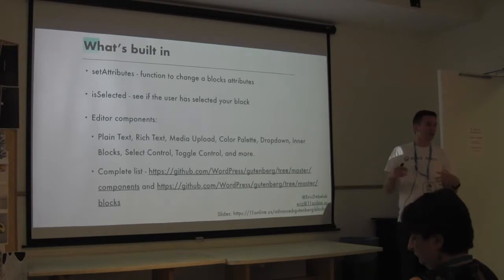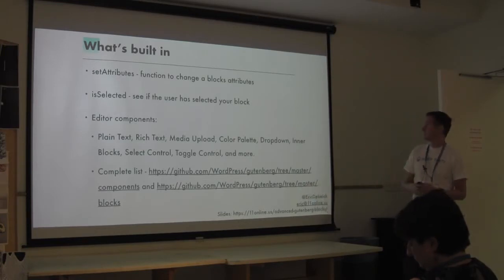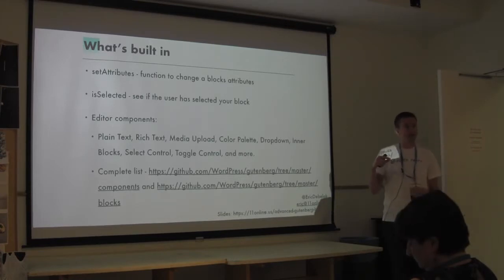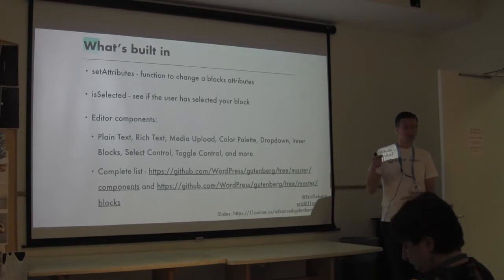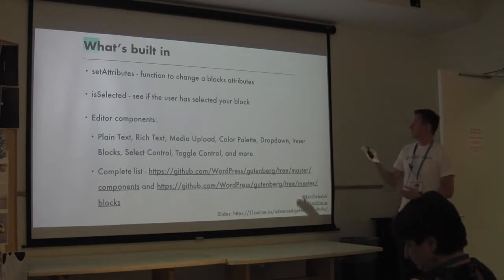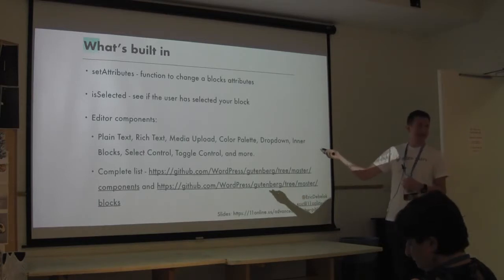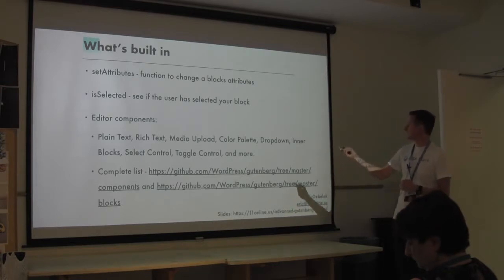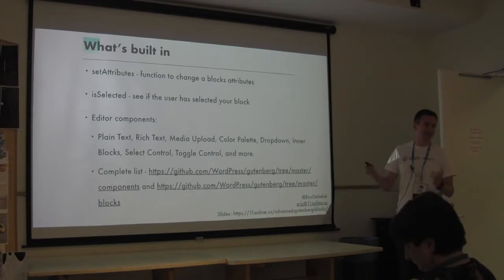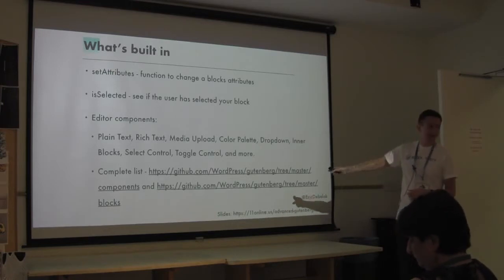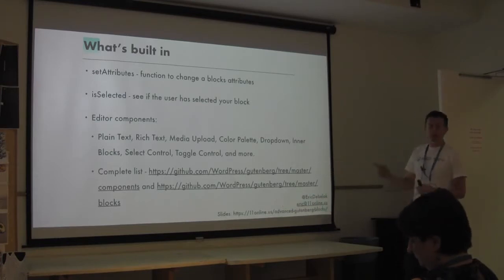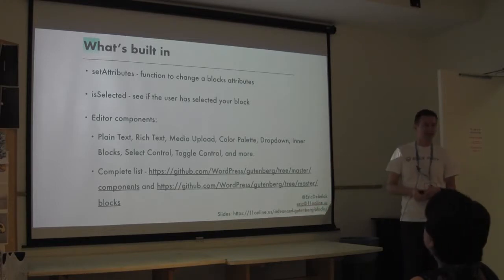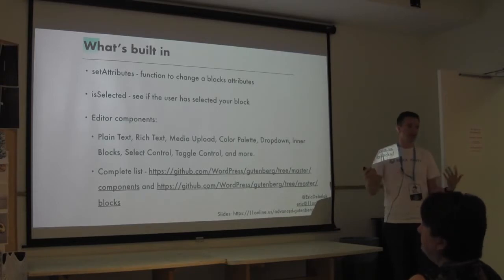What's built into Gutenberg? One really nice thing is there's tons of stuff built in and ready to go. setAttributes deals with changing your settings and tells the editor you can save the page - until you run setAttributes, you can't save because it doesn't think anything changed. isSelected tells you if the user has selected that block. There are tons of built-in editor components: plain text, rich text, media upload, color palette, dropdown, inner blocks, and this goes on and on. If you go to the GitHub repo, they have components and blocks you can import and use right out of the box.